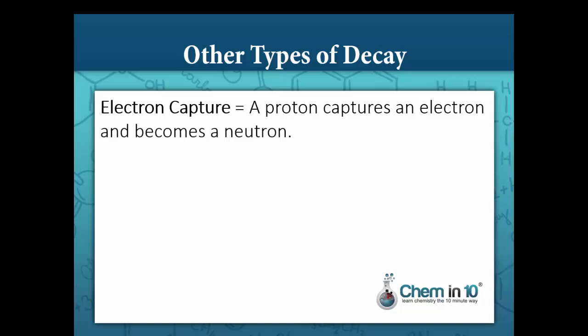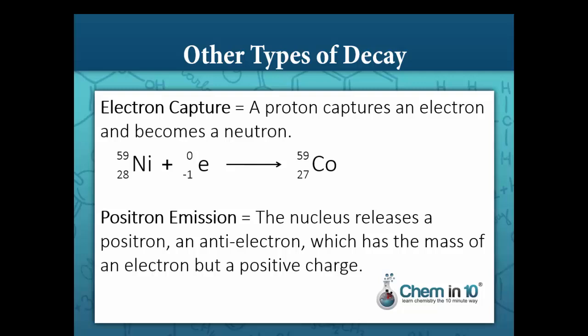There are other types of nuclear decay not typically required in a high school chemistry class. One is electron capture, in which a proton captures an electron and becomes a neutron — the opposite of beta decay. Here, nickel captures an electron, turning a proton into a neutron so that its atomic number increases by 1, while its mass number stays the same. Another type is positron emission, in which the nucleus releases a positron — an anti-electron with the mass of an electron but a positive charge. We write a positron like an electron but with an atomic number of positive 1. In positron emission, the atomic number decreases by 1 while the mass number stays the same.